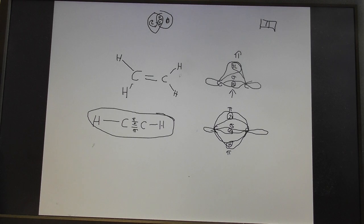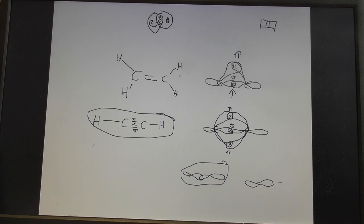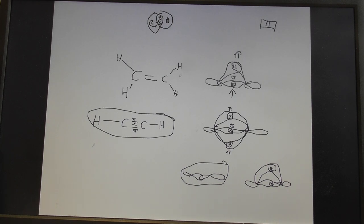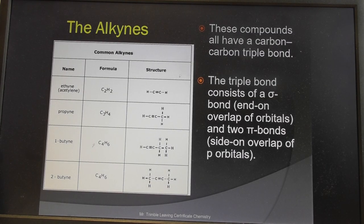Simply put, a sigma bond is when the orbitals overlap head-on. A pi bond is when they side-on overlap — but that can only happen after the sigma bond is already formed. The best side-on overlap that can be achieved after a sigma bond gives the first pi bond, and then you could have another side-on overlap giving the second pi bond. That's essentially the triple bond.